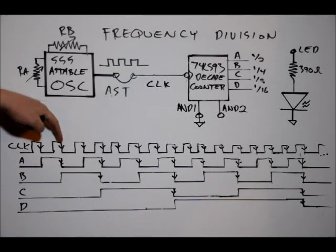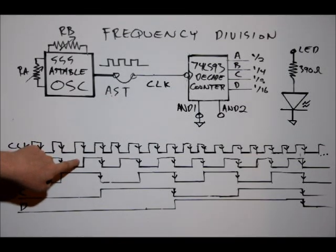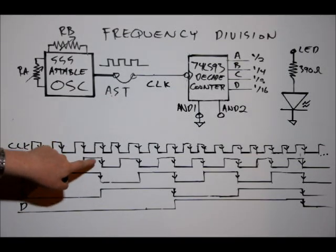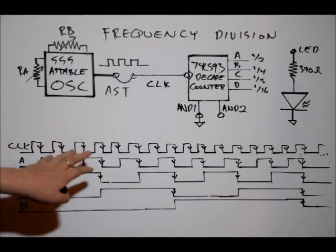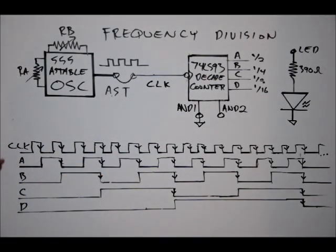So here's my first clock pulse. On the negative falling edge, the A output toggles states, in this case, it toggles high. On the next falling edge, it toggles low, so it's toggling states. On the next falling edge of the clock, out-A toggles high again, and on the next falling edge, it toggles low again, so it's changing states every single time there's a falling edge on the clock. That's our out-A.